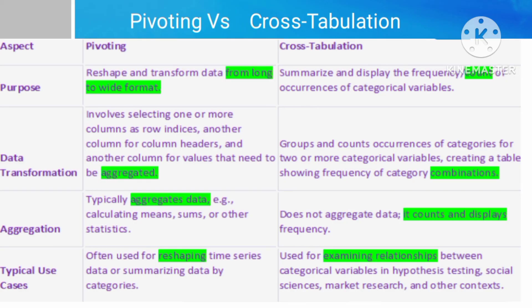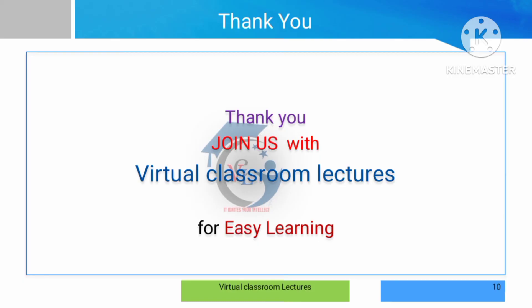The main use of pivoting is reshaping — we reshape the format for a summarized view. Cross tabulation is mainly used for showing relationships between variables and for reporting. Thank you so much. This completes the first unit. The next video will be a summary of the first unit.